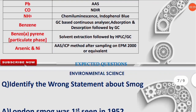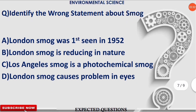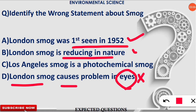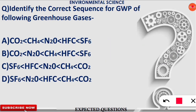The next question: identify the wrong statement about smog. Smog is of two kinds — London smog and Los Angeles smog. The wrong statement here is option D, because London smog causes problems in the respiratory tract and lungs, while LA smog causes problems in the eyes. The other statements are correct: London smog was first seen in 1952, it is reducing in nature, and LA smog is a photochemical smog.